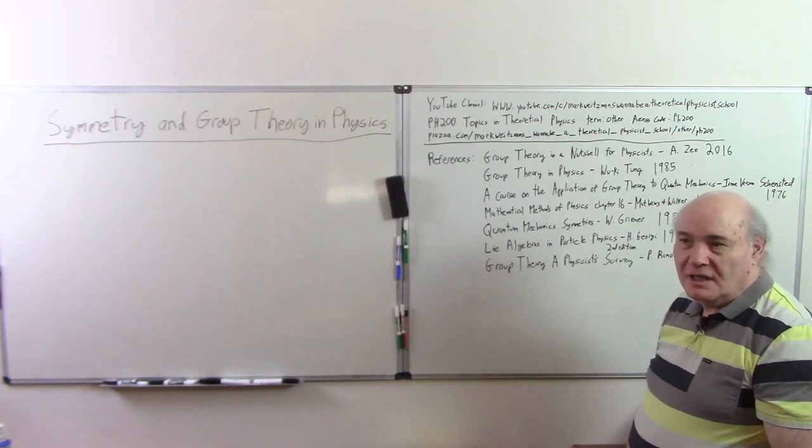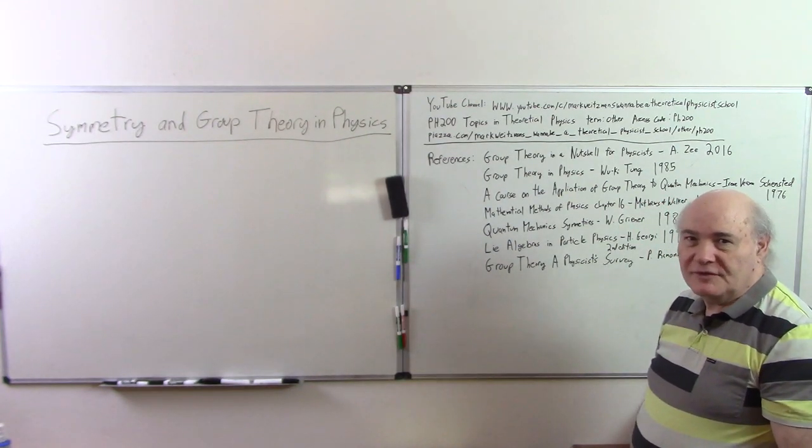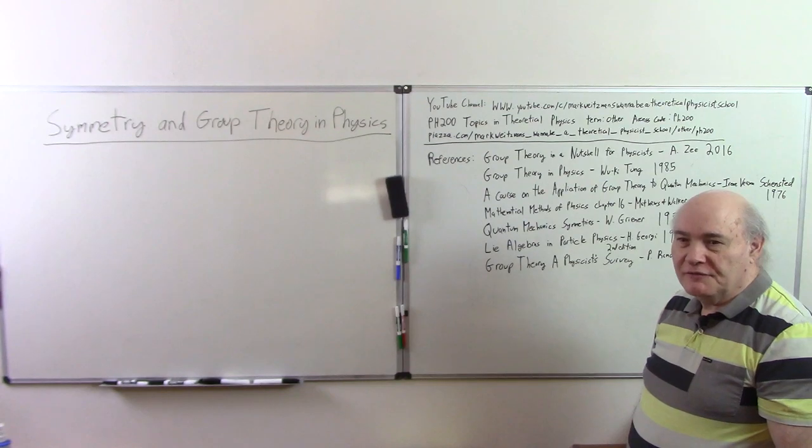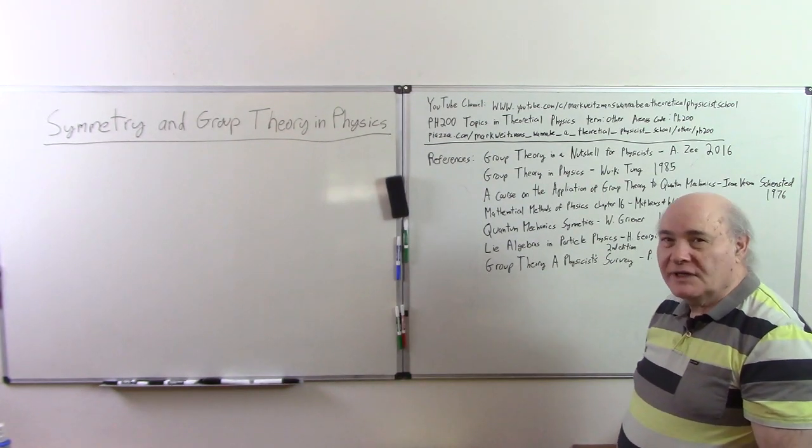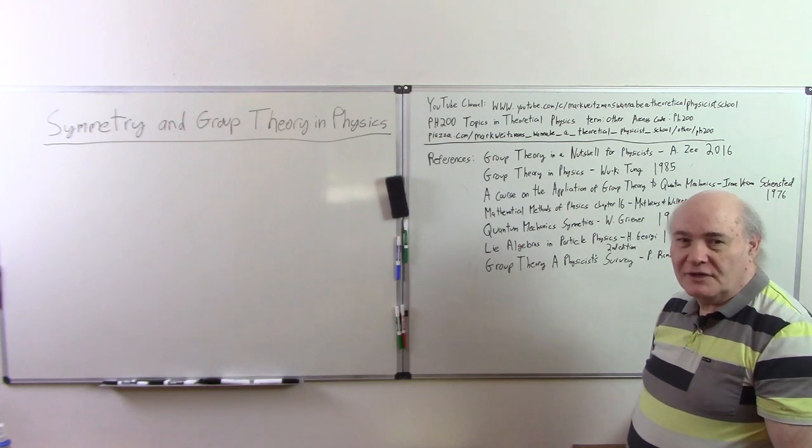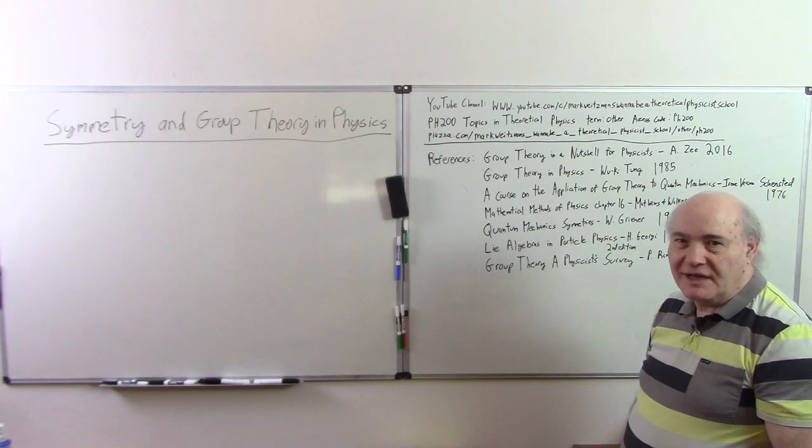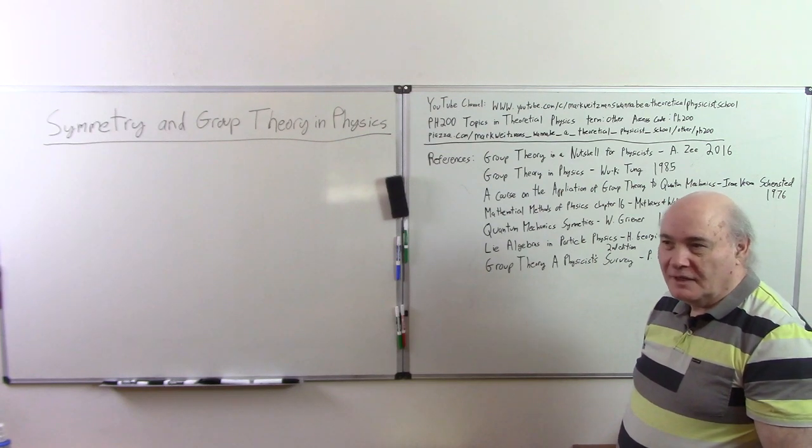I'd like to start out. Group theory is just an enormous subject and even if we restrict it to its applications in physics it's quite large. So I want to give a few references. No one book covers it all. They all leave things out, but if you read like half a dozen books you'll get a good survey of the area.